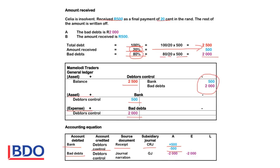Bad debts will be debited because expenses increase on the debit side, that will reduce profits, and therefore equity will decrease. Debtors' control is credited to decrease the assets. The entry for bad debts is recorded in the general journal, and you will use a journal narration.